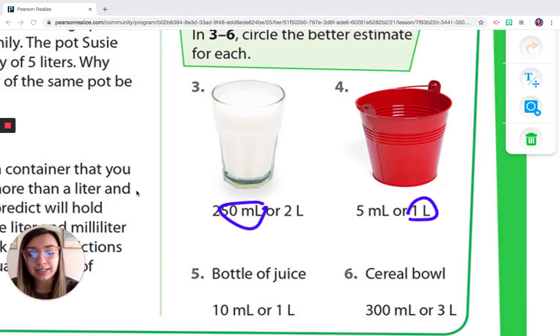So a bottle of juice, it says 10 milliliters or one liter. So I'm going to think is my bottle of juice more comparable to 10 little droppers or more comparable to a bottle of soda, a family-sized bottle of soda. And in my mind, I'm thinking a family-sized bottle of soda. So I'm going to go ahead and circle the one liter. You can't really see that, but we know what it says.